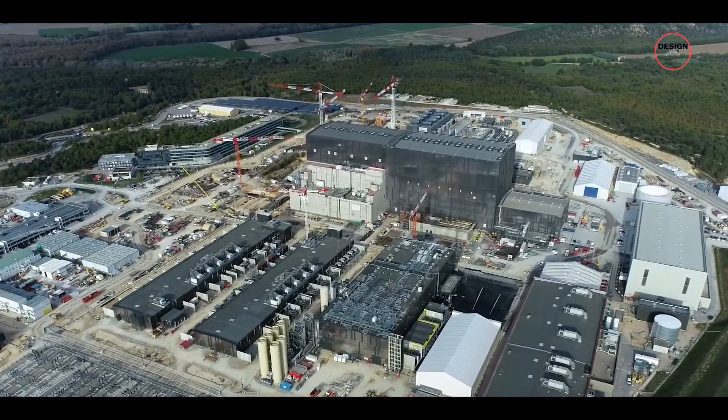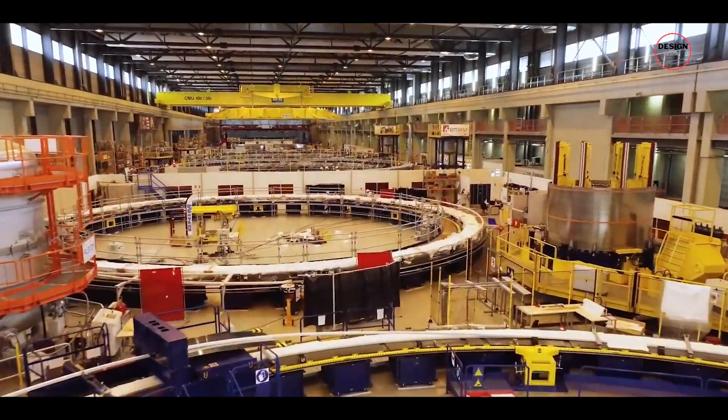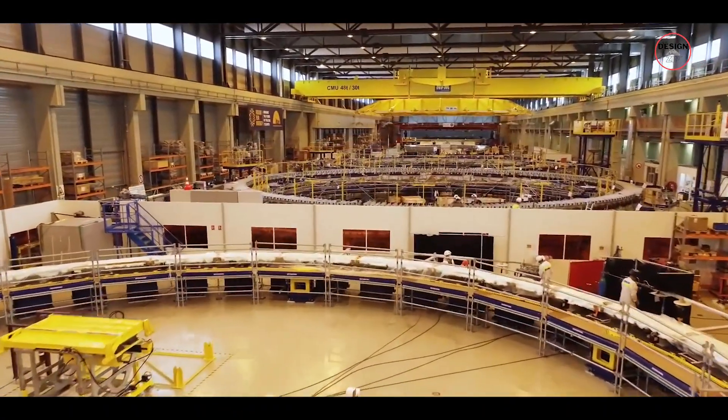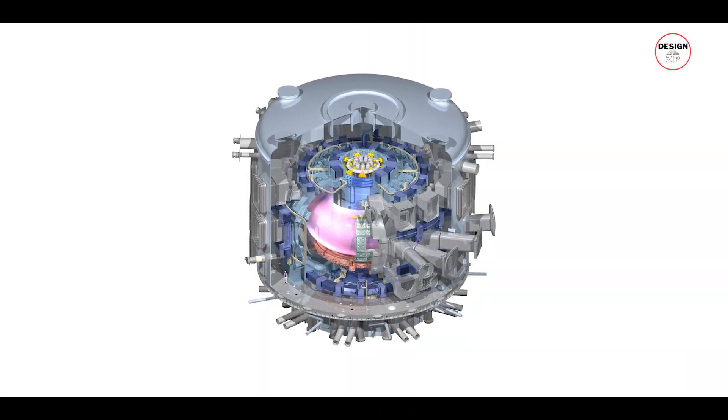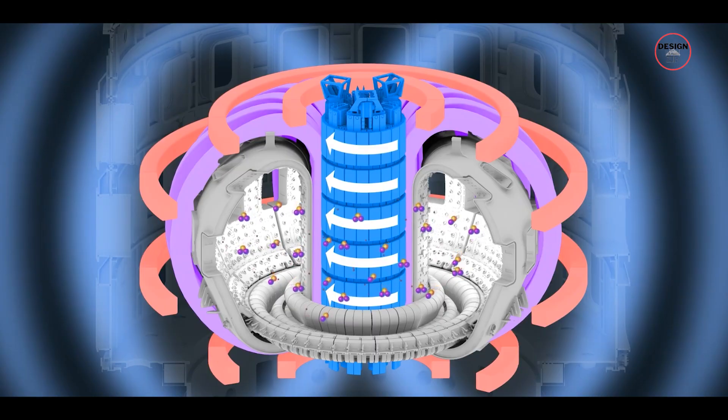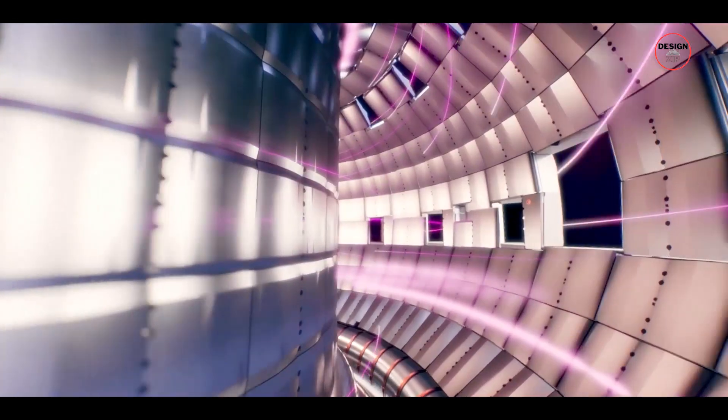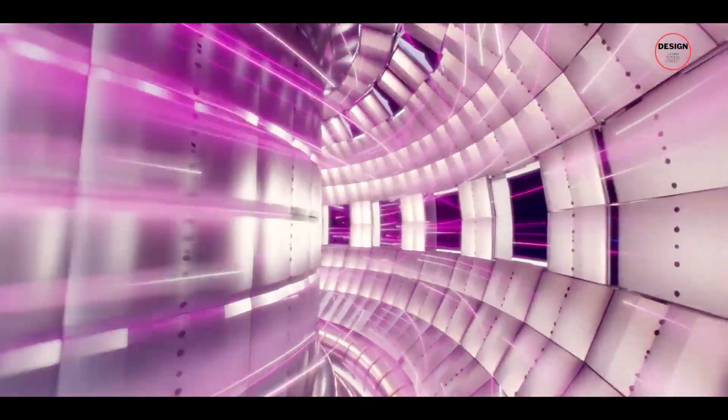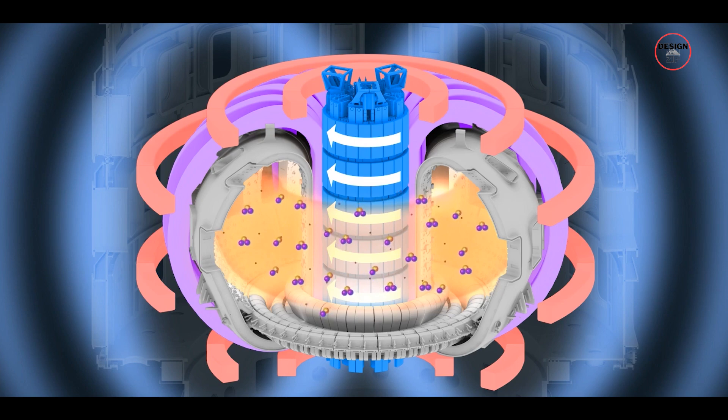But why are we just thinking about this? Why didn't we build this reactor sooner? Well, creating the same conditions that are inside stars is no easy task. The most common design for fusion reactors is called a tokamak, and this design involves superheating plasma, which is one of the four states of matter. Plasma consists of positive ions and negatively charged free electrons. This plasma is then trapped inside a donut-shaped reactor chamber using powerful magnetic fields. The tricky part has been keeping the superheated plasma stable long enough for nuclear fusion to happen. Scientists were struggling to find a way to do this for a reactor.